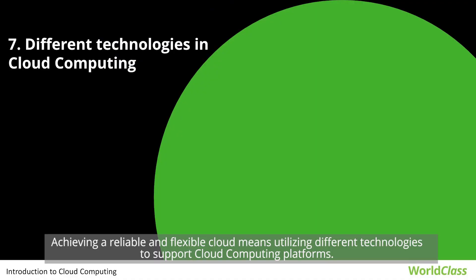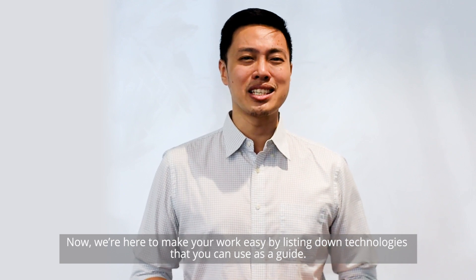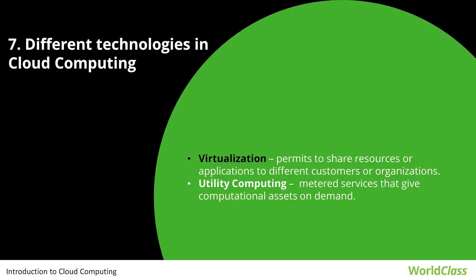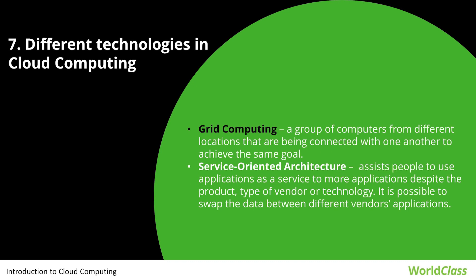Achieving a reliable and flexible cloud means utilizing different technologies to support cloud computing platforms. Virtualization permits sharing of resources or applications to different customers or organizations. Utility computing provides needed services that give computational assets on demand. Grid computing is a group of computers from different locations connected with one another to achieve the same goal. Service-oriented architecture assists people to use applications as a service to more applications, despite the product, type of vendor, or technology. It is possible to swap data between different vendors' applications.